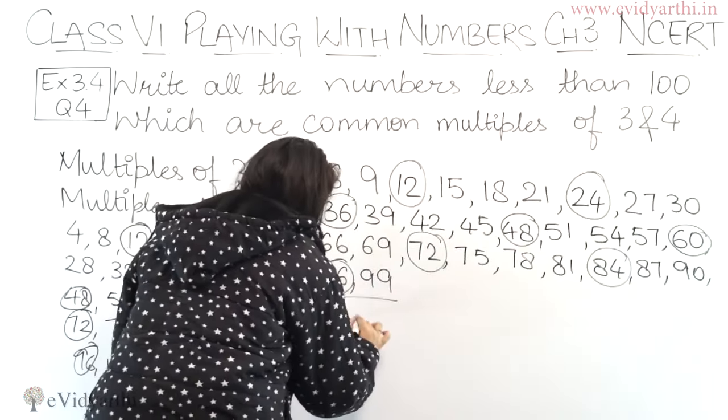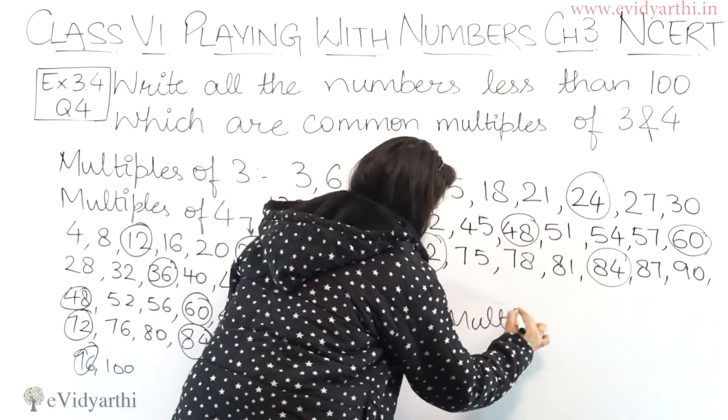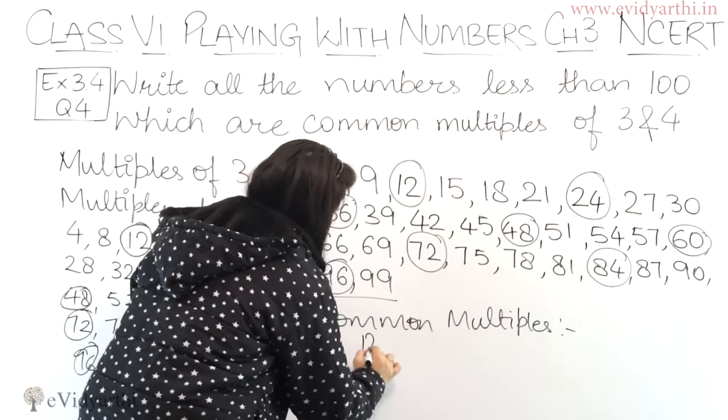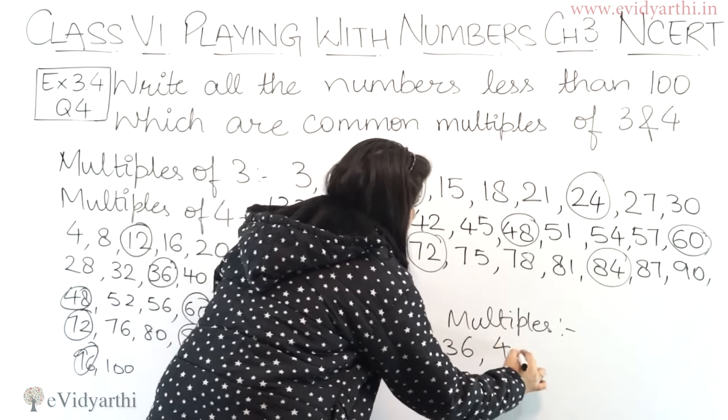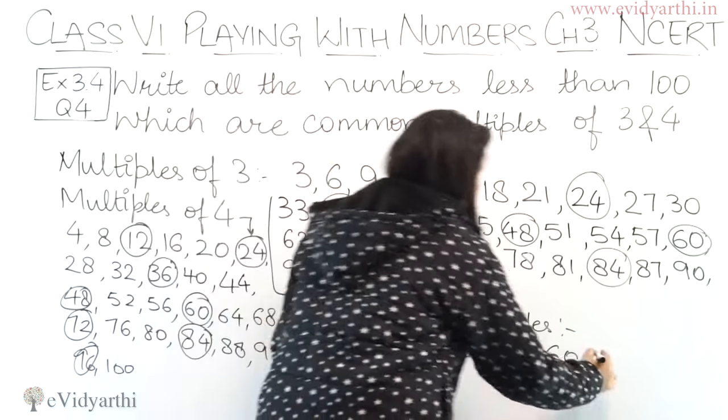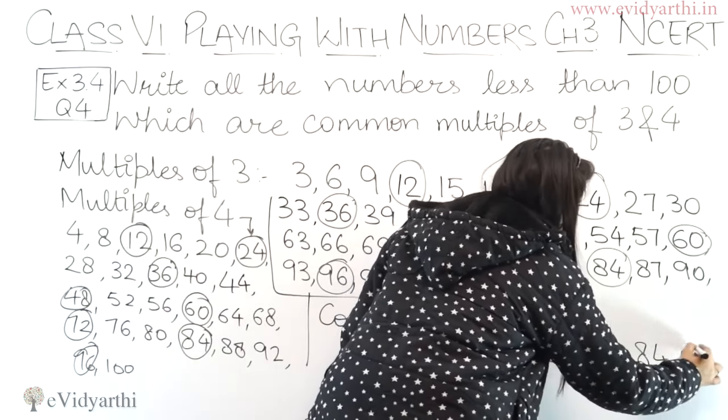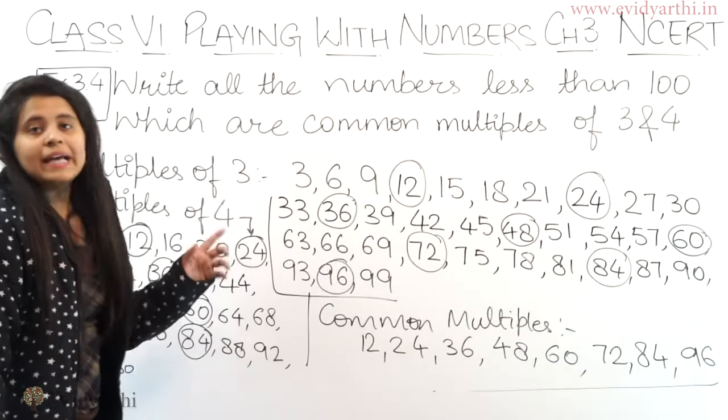Now let's write down. First is 12. Then 24. Then 36. Then 48. Then 60. Then we have 72, 84, and 96. So these are the common multiples of 3 and 4.